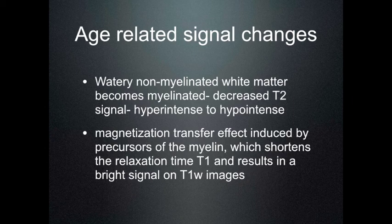On T1-weighted images, this is a slightly more complex change happening. However, what is important to note is that bright signal on T1-weighted images indicates myelination. This is caused by the magnetization transfer effect induced by the precursors of myelin.